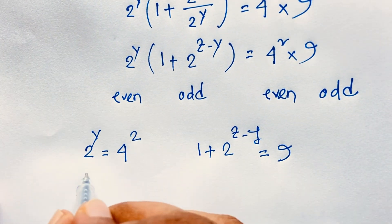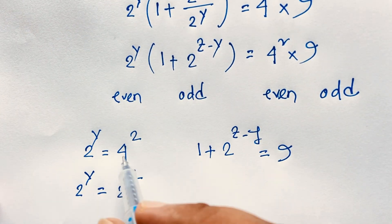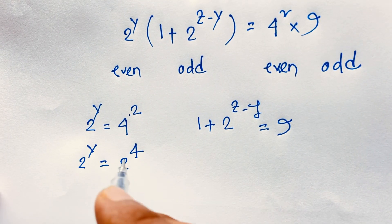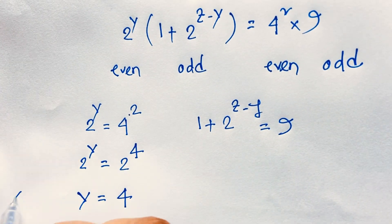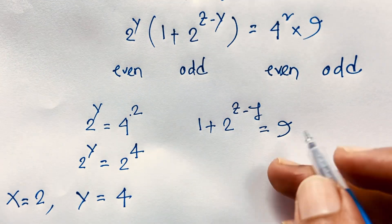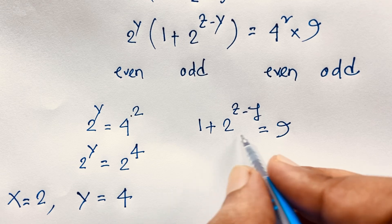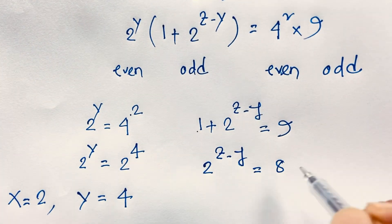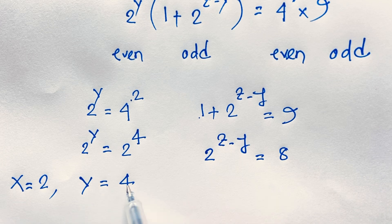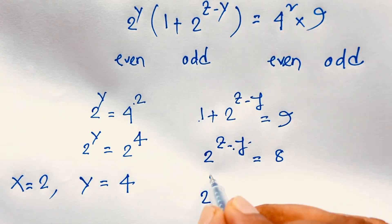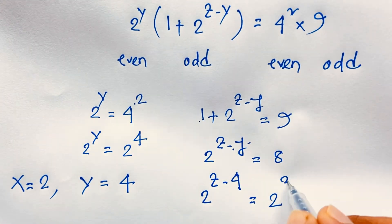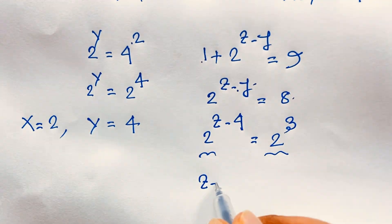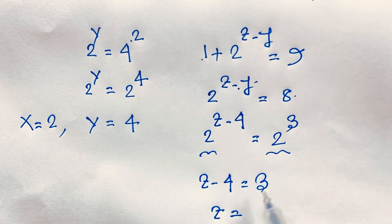Now solving for z: from 1 plus 2 to the power z minus y equals 9, we get 2 to the power z minus y equals 8. Since y equals 4, this becomes 2 to the power z minus 4 equals 2 to the power 3. Since the bases are the same, the exponents are equal, so z minus 4 equals 3, giving z equals 7.